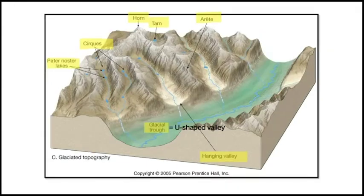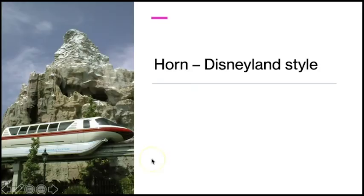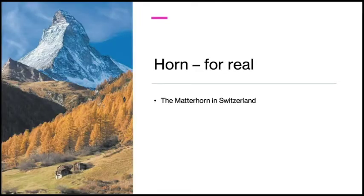Some of the most common erosional features formed by alpine glaciers include glacial troughs (also called U-shaped valleys), horns, cirques, tarns, arêtes, hanging valleys, and Paternoster lakes. This is Yosemite Valley in California, one of the most famous U-shaped valleys — once upon a time, this valley was almost entirely filled by a glacier. Disneyland's Matterhorn Ride was modeled after the glacial horn in Switzerland, which, like other horns, is a pyramid-shaped mountain that was shaped by glacial erosion.